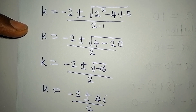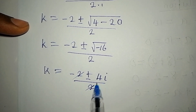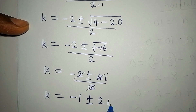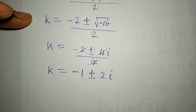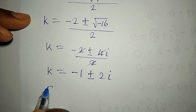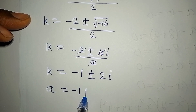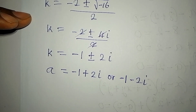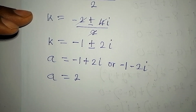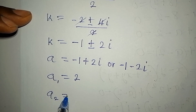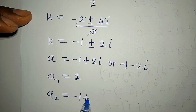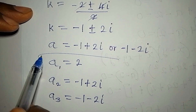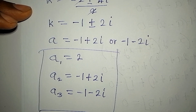The square root of negative 16 is 4i, where the negative is represented by i — it's imaginary. So we write 4i over 2. Now 2 cancels into both terms, so k equals minus 1 plus or minus 2i. Since k equals a, we have a equals minus 1 plus 2i or a equals minus 1 minus 2i. So the three solutions are: a1 equals 2, a2 equals minus 1 plus 2i, and a3 equals minus 1 minus 2i. Thank you for watching to the end.